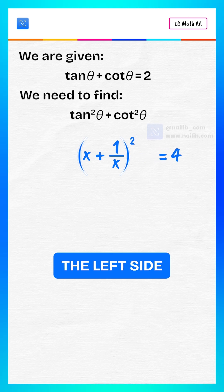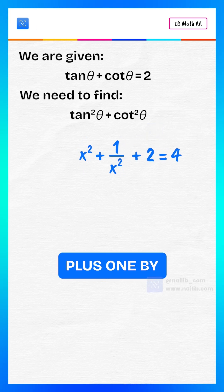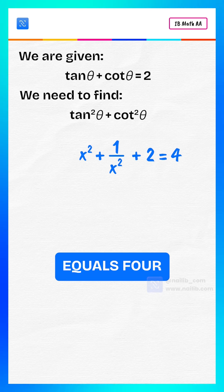Now expand the left side using identity: x squared plus 1 by x squared plus 2 equals 4.